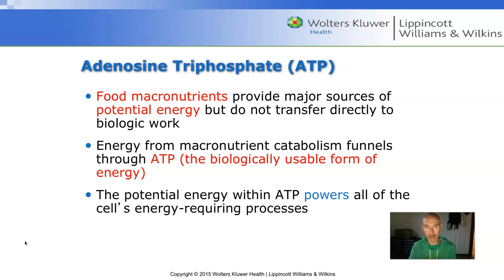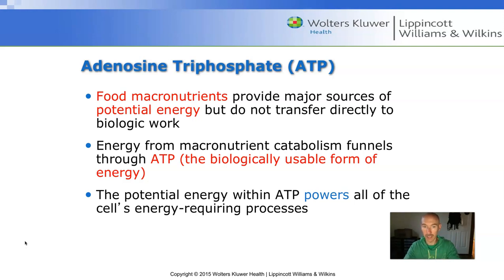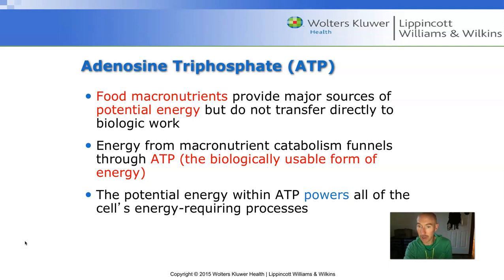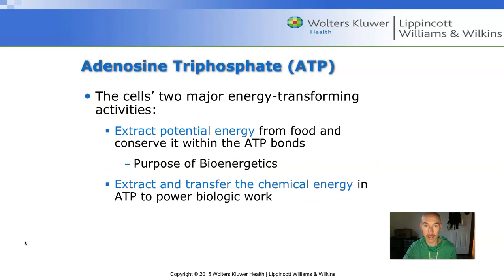ATP is a molecule that contains three phosphates — that's where the triphosphate comes from — and there is a molecule of adenosine that links those three phosphates together. Energy is harnessed in the bonds that hold those phosphates together. When we're producing ATP, we are storing energy in those phosphate bonds. When we use ATP, the energy held in those phosphate bonds is liberated as the bonds are broken apart. ATP is the biologically usable form of energy, required for all processes in the human body that require energy.